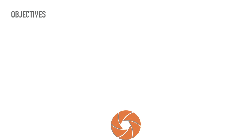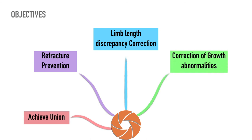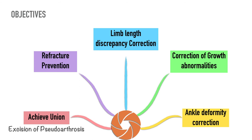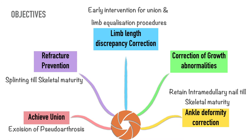The main objectives of treatment are to achieve union, prevent refracture, correct limb length inequality, correct associated growth abnormalities, and prevent ankle deformities and arthritis. The pseudoarthrosis must be excised to achieve union. Refracture can be prevented by splinting the limb in an orthosis or keeping an intramedullary nail until skeletal maturity. Shortening can be minimized by obtaining early union, and for established shortening, limb equalization procedures can be done. Valgus deformity at the ankle joint can be minimized by retaining an intramedullary nail that crosses the ankle joint and ensuring union of the fibular pseudoarthrosis.